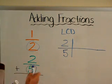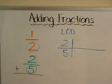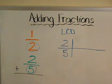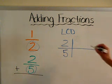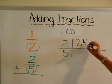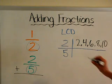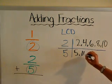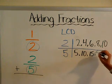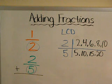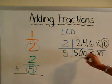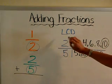In this case, our denominators are 2 and 5. So what we're going to do is list the first four or five multiples for each number. For 2, it would be 2, 4, 6, 8, 10. And for 5, we would get 5, 10, 15, 20. Now we have to look and see if we have any common number for both of these. In this case, we have 10, and that's also the smallest, or the least common denominator.